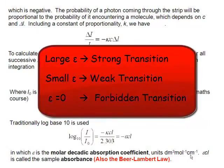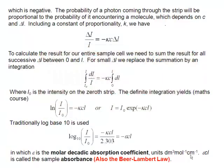If it's zero, but you know the energy levels are there, then it's a forbidden transition. So having this epsilon allows us to be quantitative about the strengths of electronic transitions.